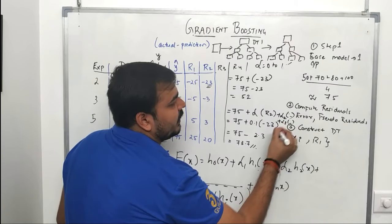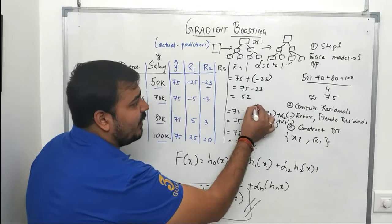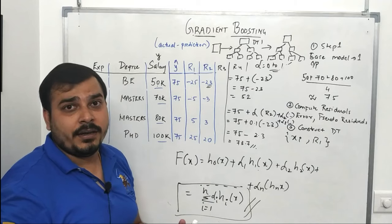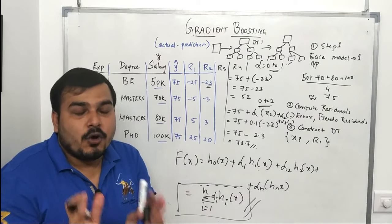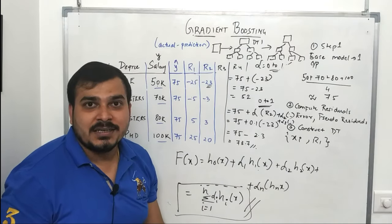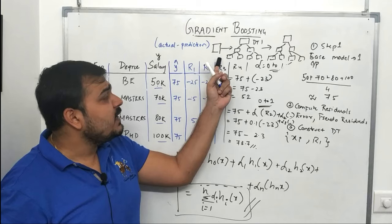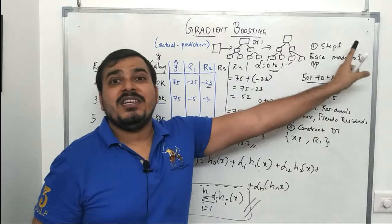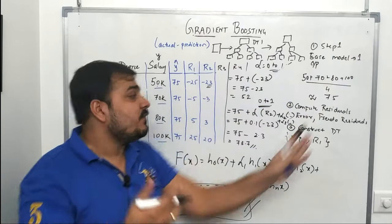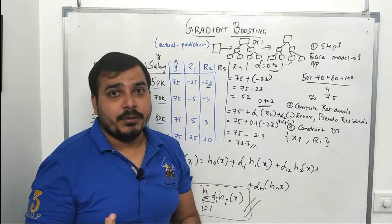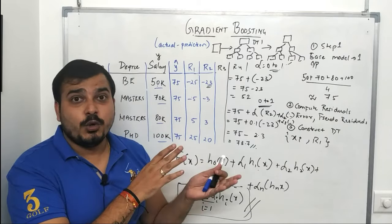Each subsequent decision tree's output is multiplied by its learning rate alpha and added cumulatively. The alpha values are typically determined through hyperparameter tuning and range between 0 and 1. This is why it's called a sequential or boosting tree — we sequentially boost the base model using residuals computed at each step.